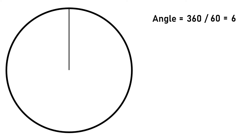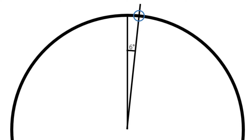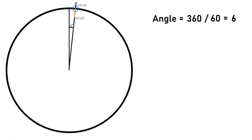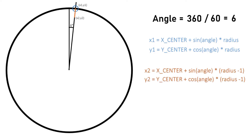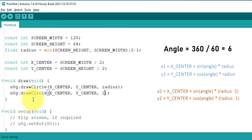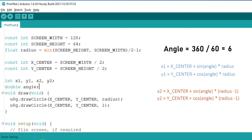Now we have calculated the angle. If we draw a line from the center of the circle at 6 degrees, it will intersect the circle at a point — that is where we start drawing the line. We need x and y coordinates for both the start and end of the line. We can calculate the starting coordinates using the sine and cosine formulas, and for the ending coordinates we use the same formulas but subtract 1 from the radius. We will define variables for x, y coordinates, and angle.